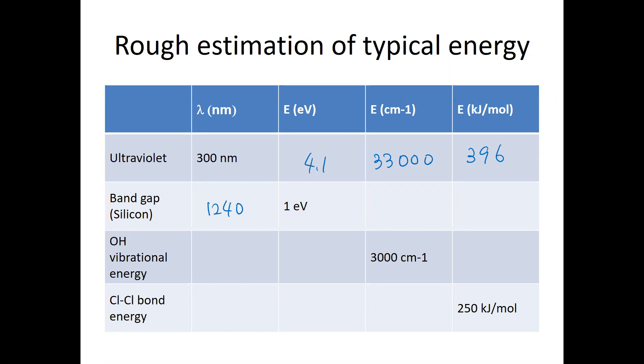And in Kaiser, which is 8,100 Kaiser, which is larger than the vibrational, but smaller than ultraviolet. And in energy, it's around 97 kilojoule per mole, which is smaller than the chemical bond energy.